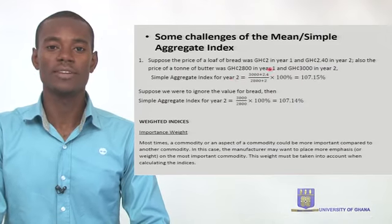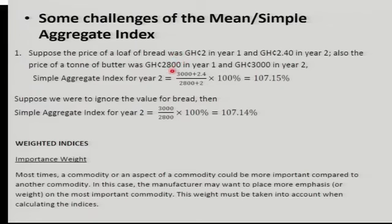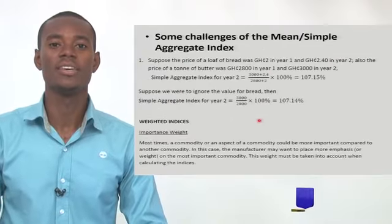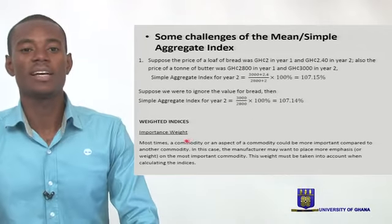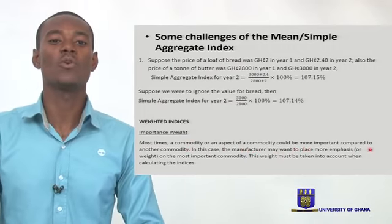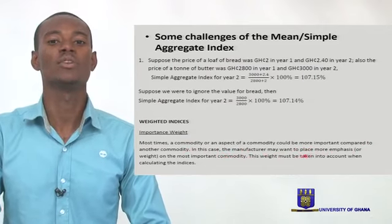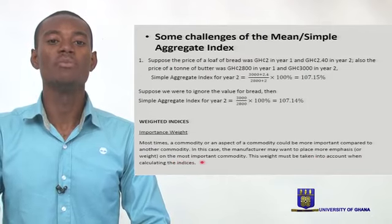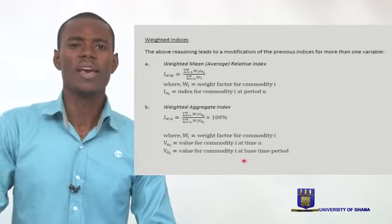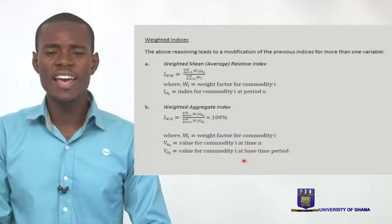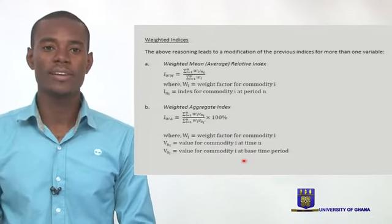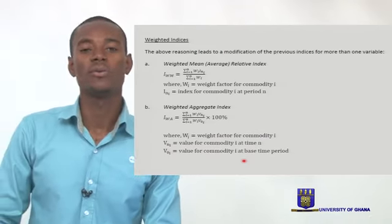With two products like bread and butter, their prices vary significantly, but we can give them weights to account for the variation so one doesn't get submerged in the shadow of the other. A commodity of more importance gets a higher weight. So we take what we did under the mean relative index and the aggregate index, and tweak it a little — add weights — to give a more meaningful computation of the indices.